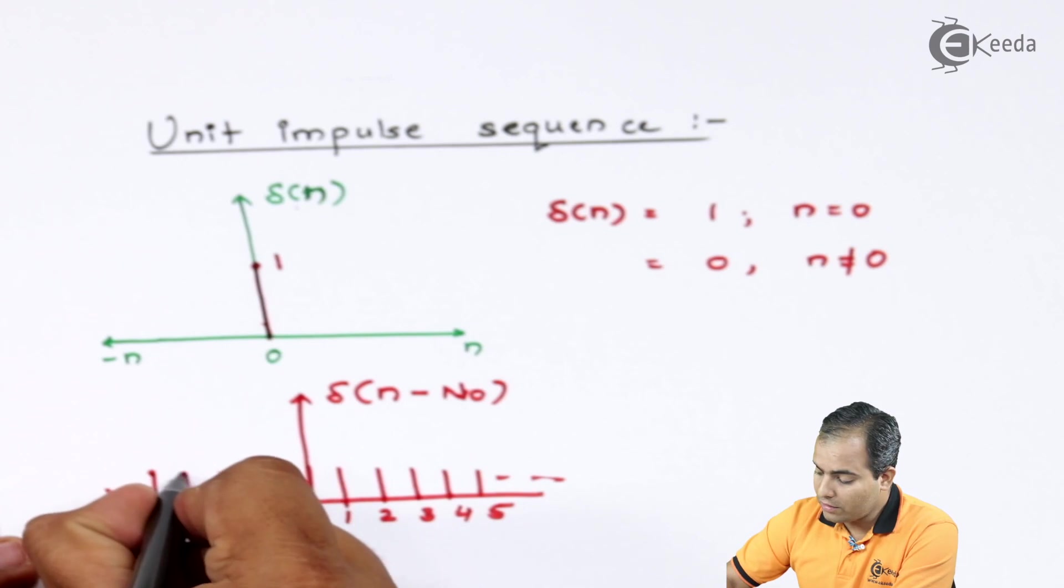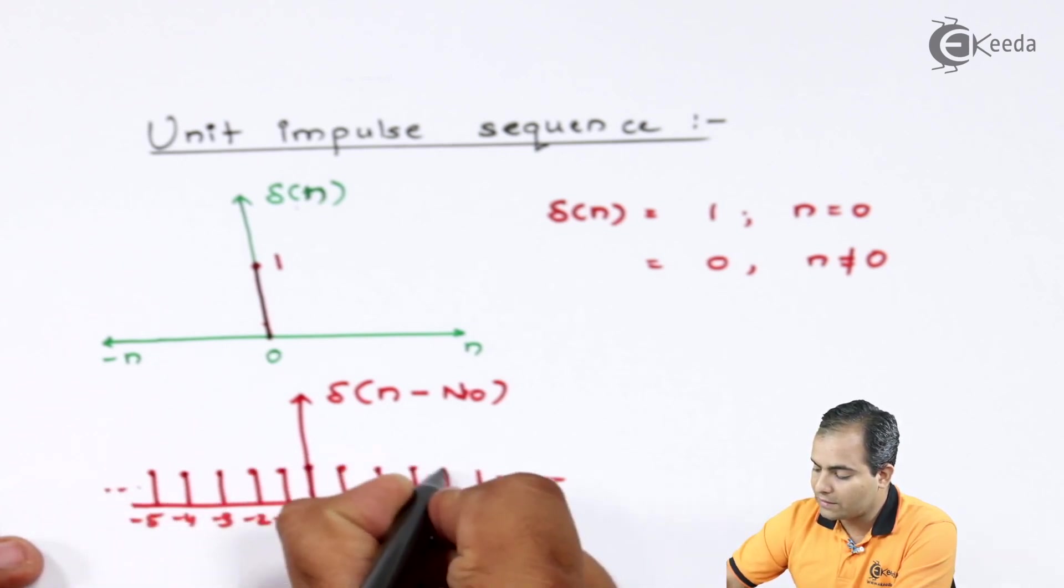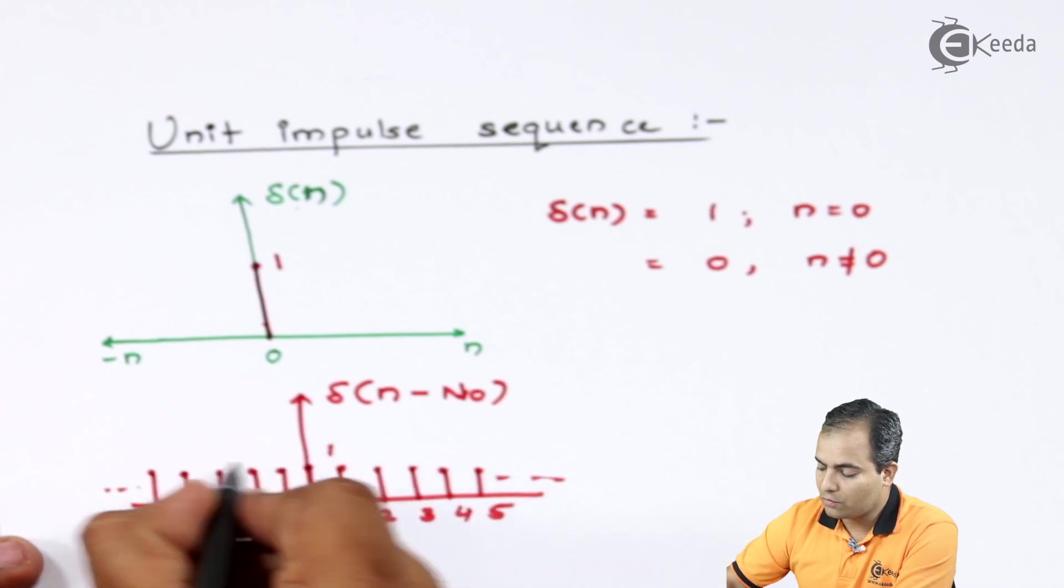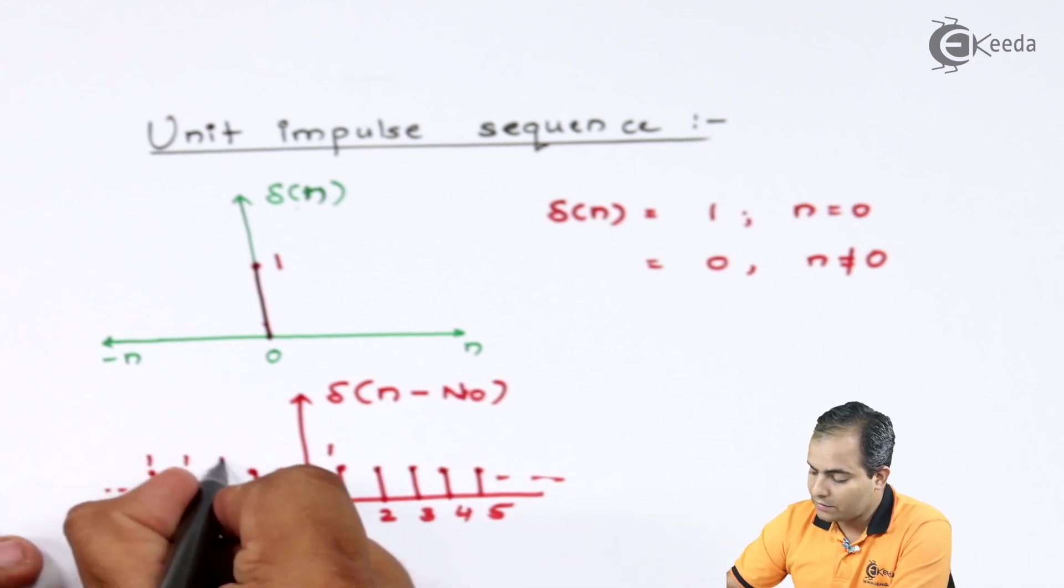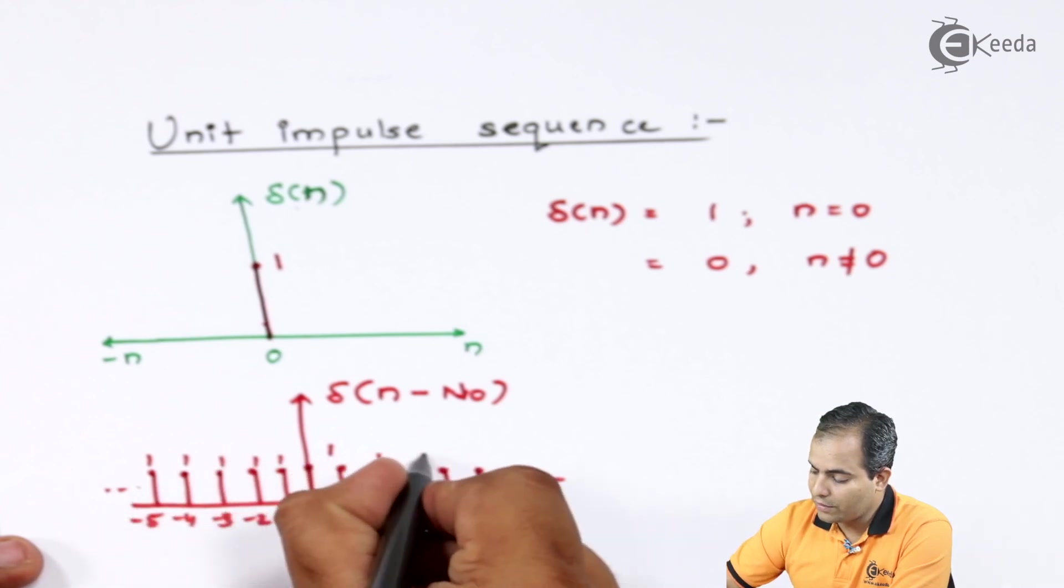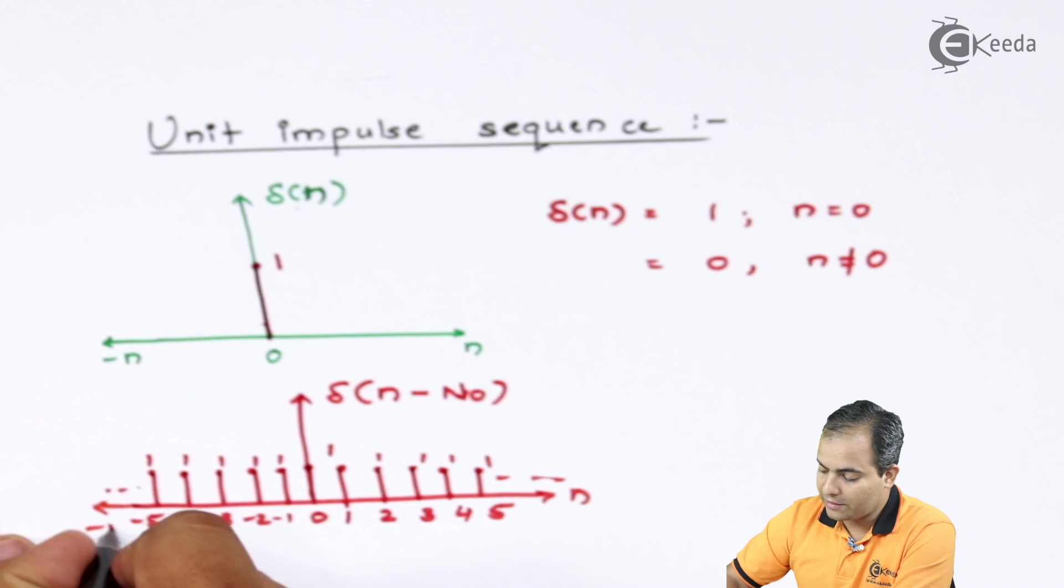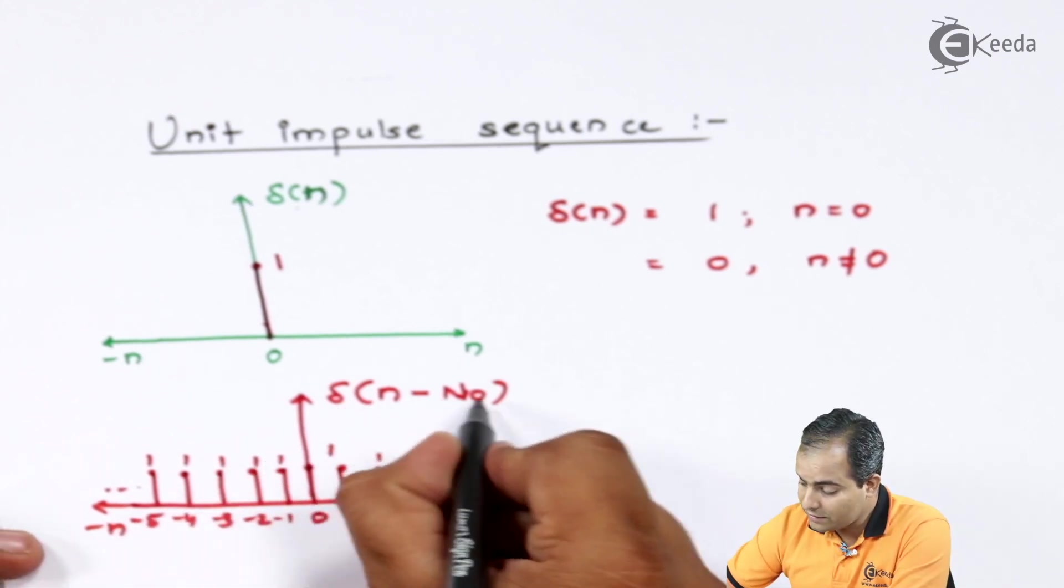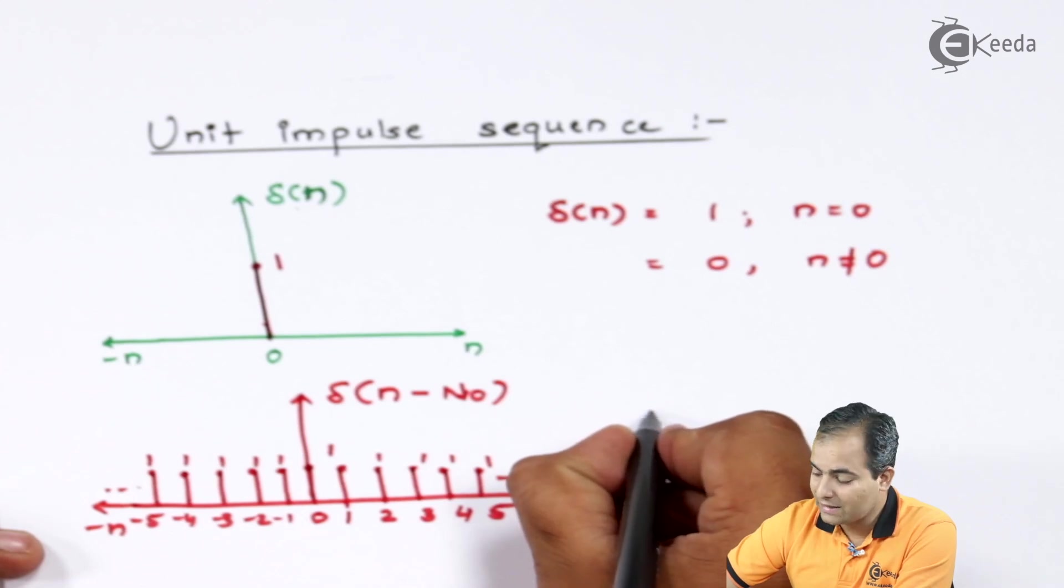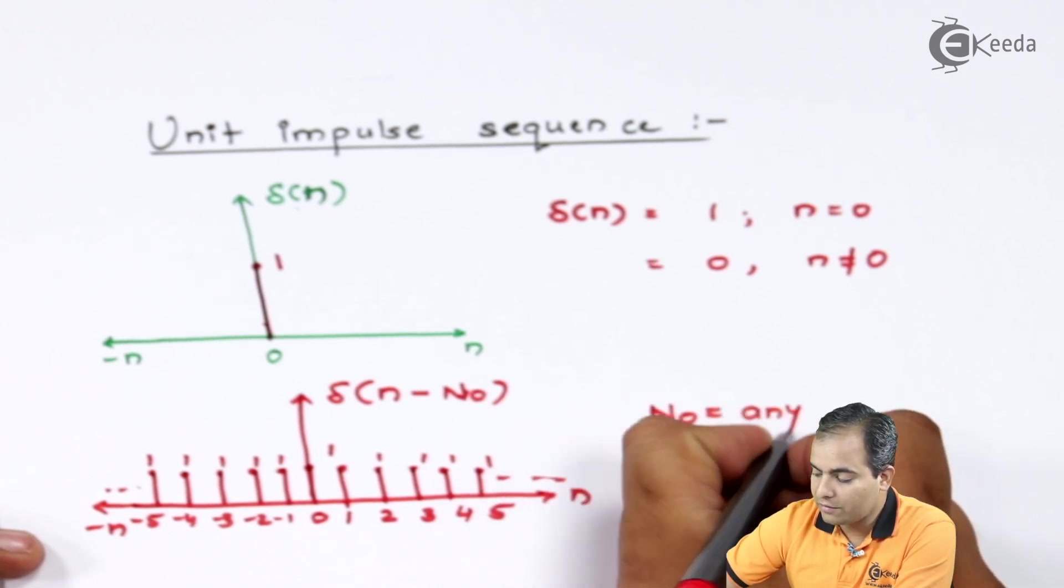But in all the stages, the amplitude of this graph remains same and it is one. This amplitude will remain same, it will not change throughout the time period. So this is the way to represent this graph, whereas this n₀ is any integer value.